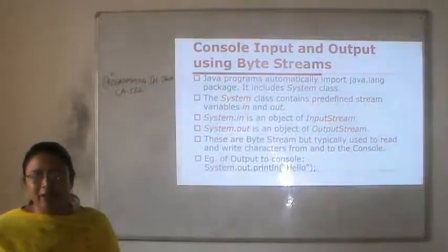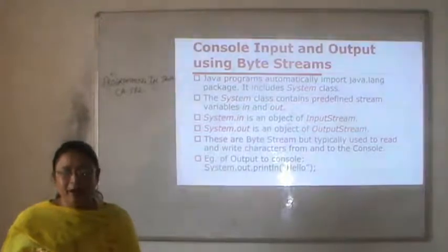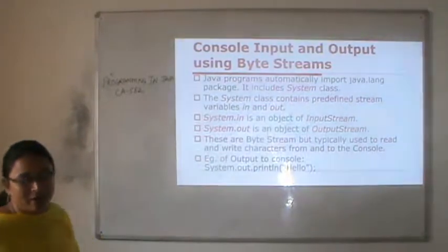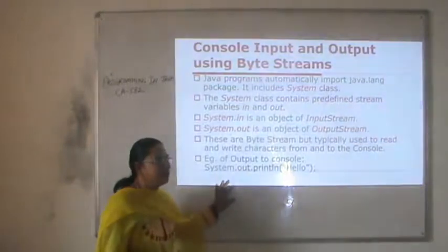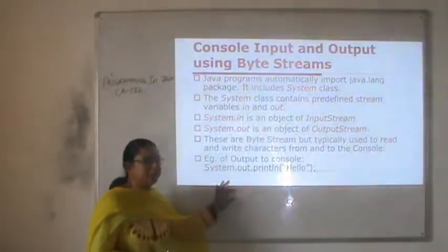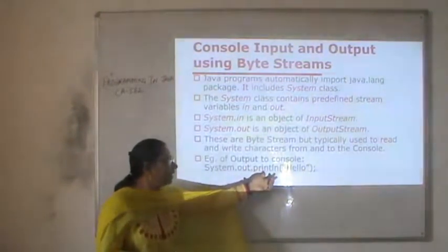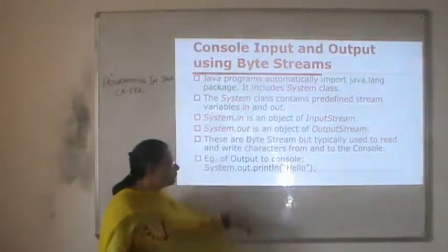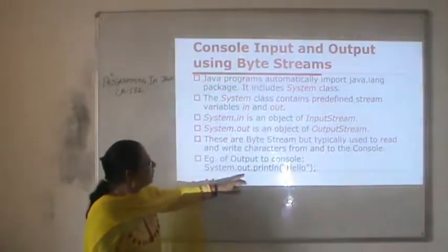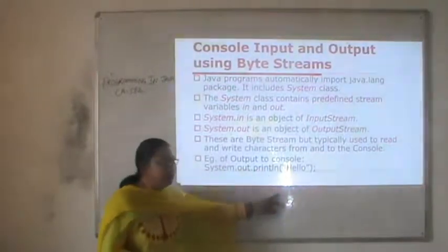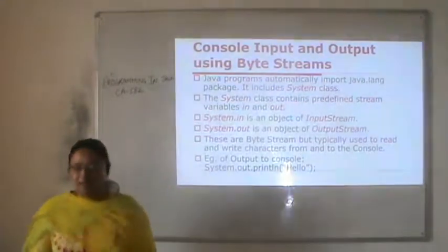These are byte streams but are typically used to read and write characters from and to the console. An example of output to the console is when we want to display a message on the screen — we use system.out.println and display a string. Here, System is the class, out is the object of OutputStream, and println is the method defined in the System class.